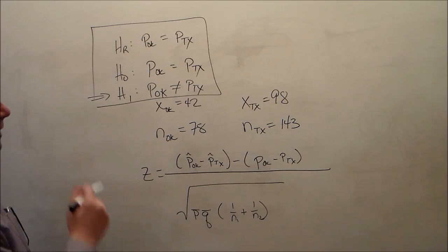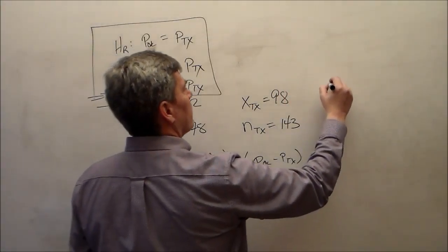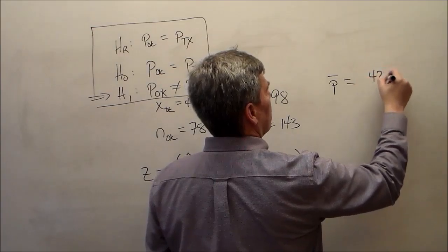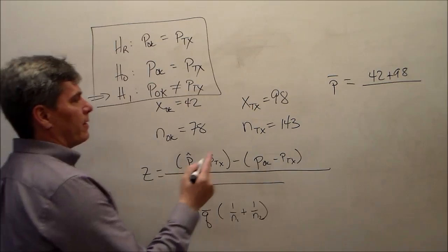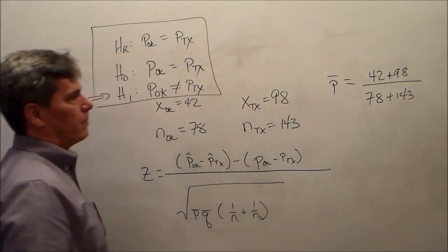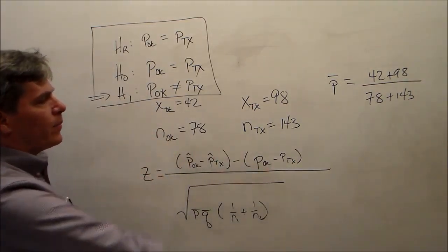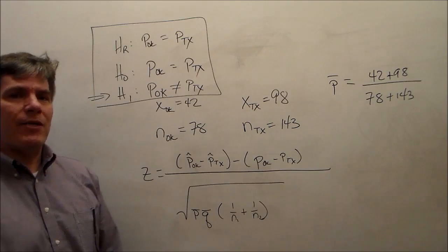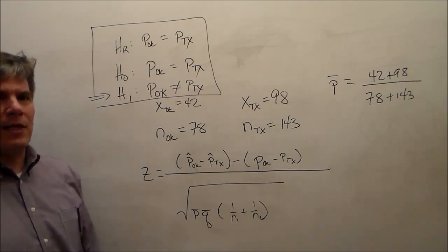If we really want to, we can substitute everything here. P bar, remember, is equal to the total number of successes. And once we calculate this test statistic, we know it follows a standard normal distribution. We find the corresponding P value. If the P value is less than alpha, we reject the null hypothesis. If it's greater than alpha, we fail to reject the null hypothesis.